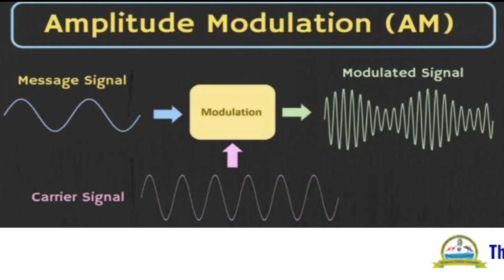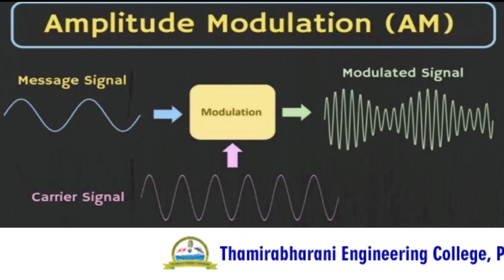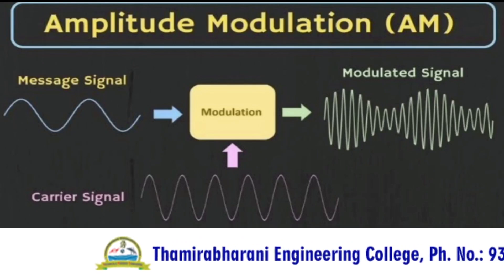It is often called AM and is commonly used in transmitting information through a radio carrier wave. Amplitude Modulation is mostly used in the form of electronic communication.